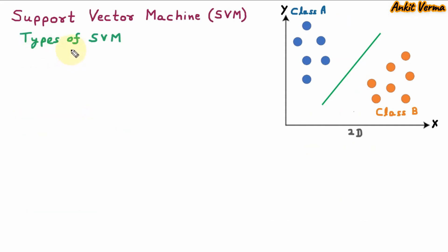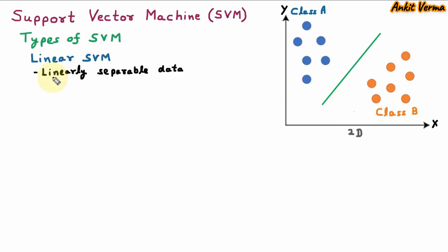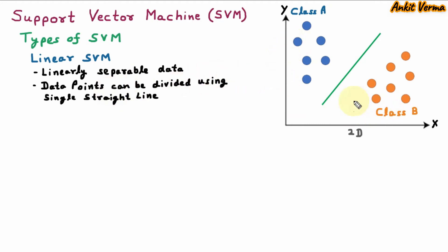Now we are learning types of SVM. The first type is Linear SVM. It contains linearly separable data. Here linearly means line. So in Linear SVM, data points can be divided using a single straight line. Just like in the diagram, we have class A and class B, and they can be divided using a single straight line. So this is Linear SVM.